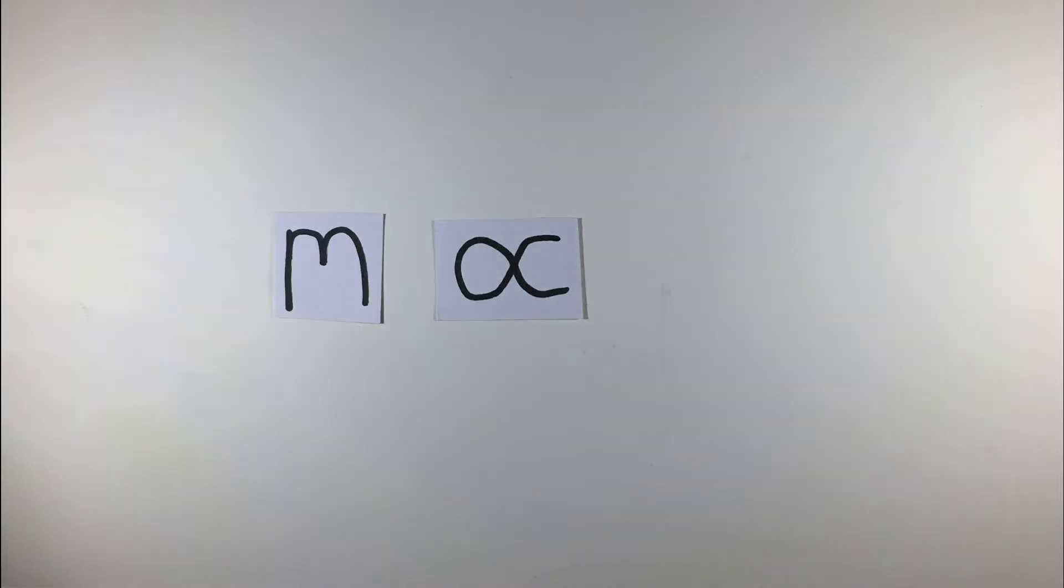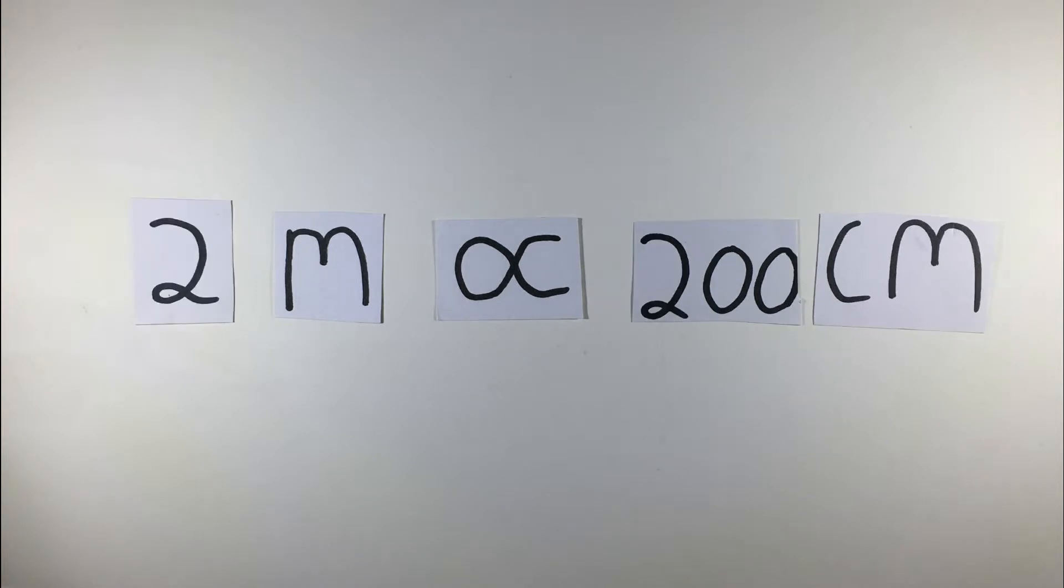For example, one metre is directly proportionate to 100 centimetres, and if one metre increases to two metres, the value in centimetres will also increase.